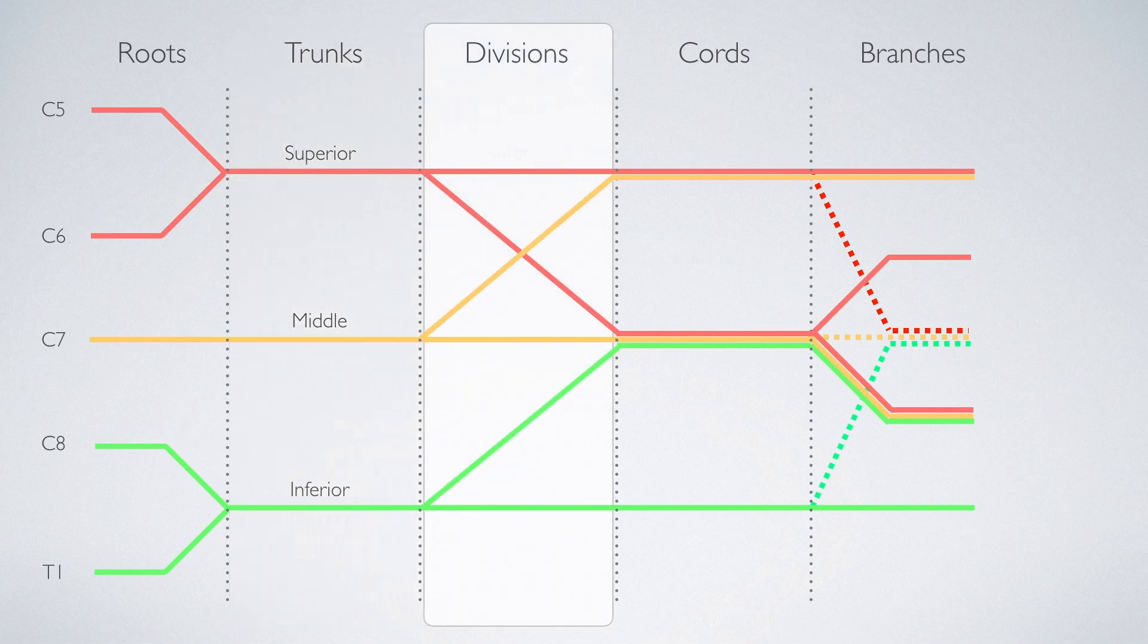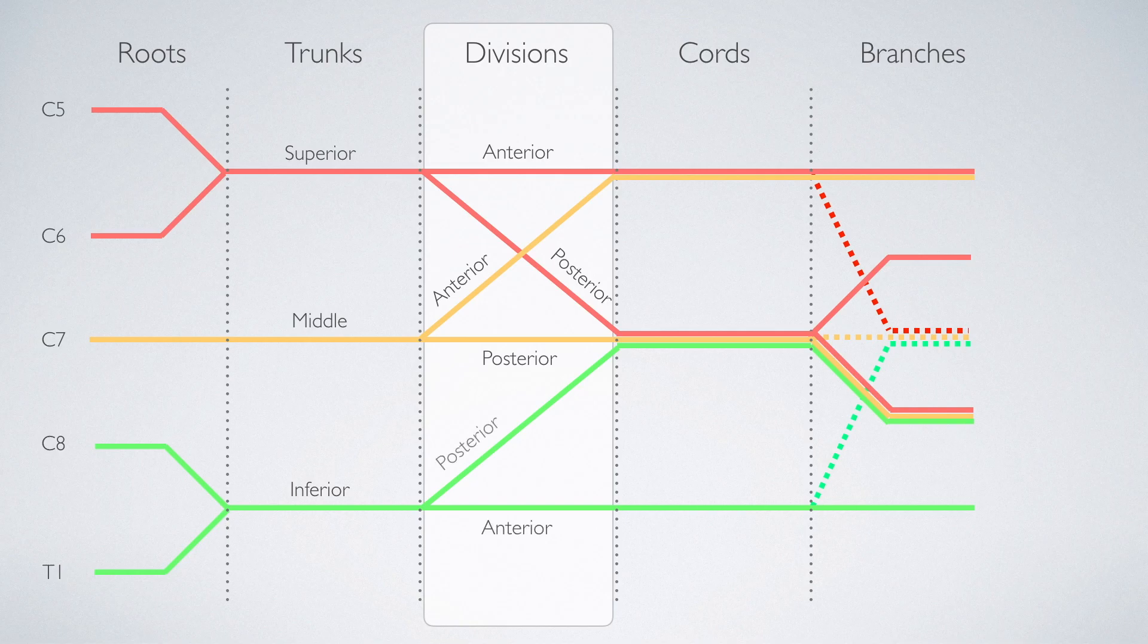The divisions are easy to remember because all the trunks divide and form both an anterior and posterior division. So the superior trunk has an anterior and posterior division, the middle trunk has an anterior and posterior division, and the inferior trunk has an anterior and posterior division. To remember which one is the anterior and which one is the posterior, remember that the posterior branches all come together in the center and the anterior divisions of the middle trunk leaves and joins the anterior division of the superior trunk.